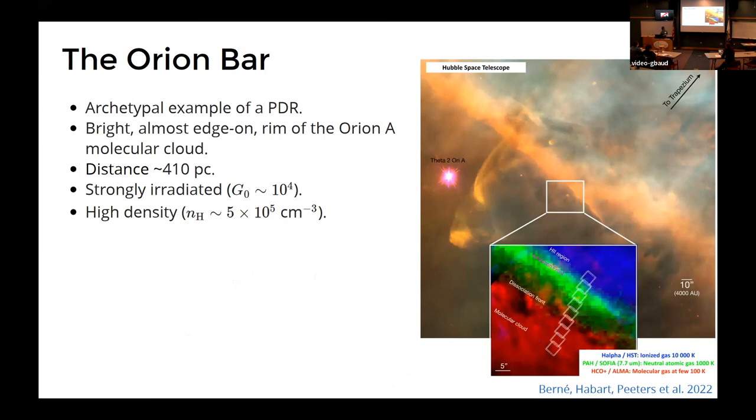which is basically an almost edge-on PDR of the Orion A molecular cloud. So you get the source of ionizing radiation up here, and then you have the molecular cloud basically tilting towards the observer. So you can see the stratification almost edge on.